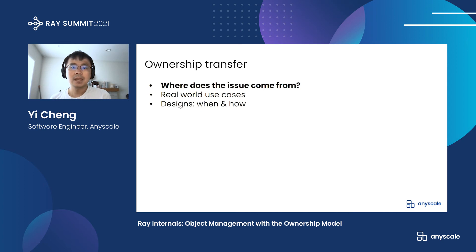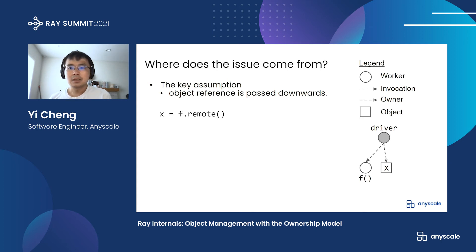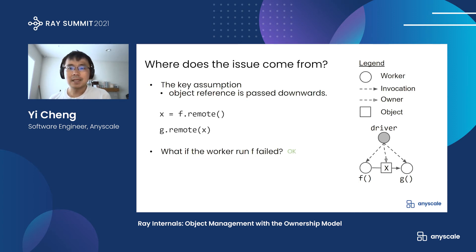So why do we need ownership transfer? Here we have one assumption about our model — that object references are passed downwards. Let's do a quick recap. Suppose in the driver we call a remote function f, and the return is x. Here the owner of x will be the driver. Then the driver passes x to remote function g. What if the worker running f failed? This is fine, since x is owned by the driver, and g can still access x even if the worker running f failed. Then, what if the driver exits? In this case, g won't be able to access x anymore, but it's also okay, since the worker running g will be killed after the driver dies. This is the downward passing pattern, where the object is passed from the owner downwards to the other functions.